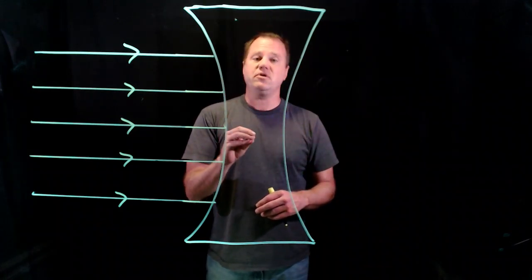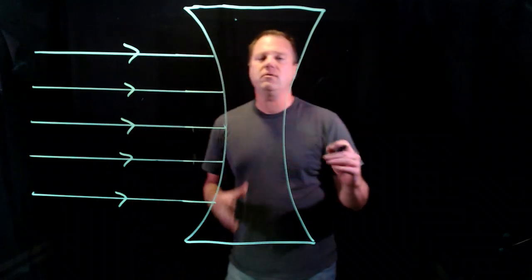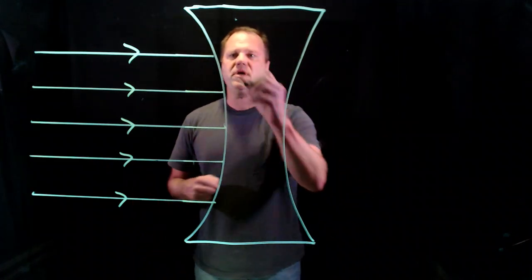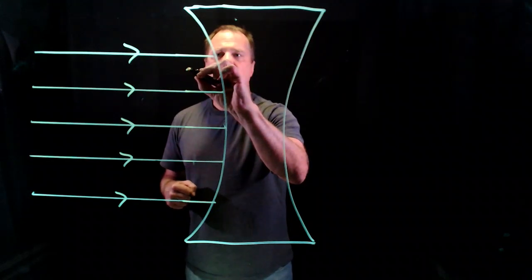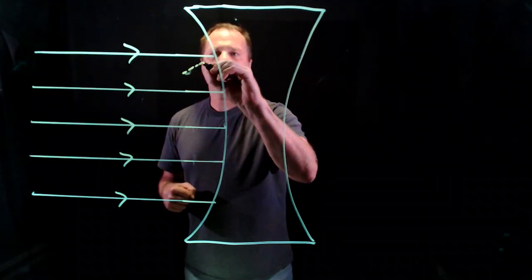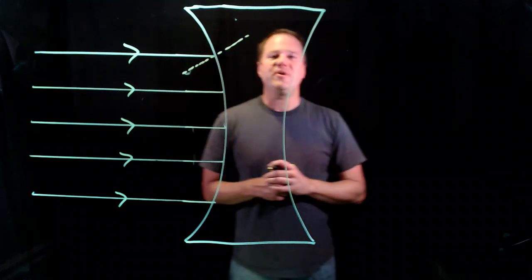When we use Snell's law, we always draw a perpendicular line to the surface. So I'm going to look at this first incoming ray and draw a line that's approximately perpendicular to that surface.